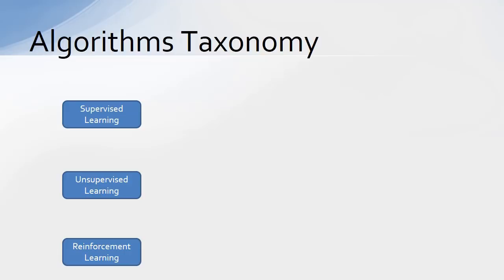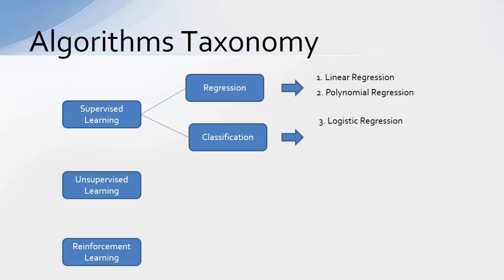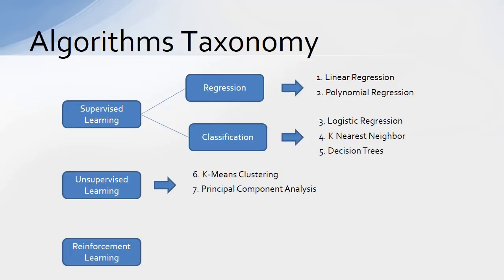Supervised learning can be further subdivided into regression and classification. The top regression algorithms are linear regression and polynomial regression. The top classification algorithms are logistic regression, K nearest neighbor, and decision trees. The popular unsupervised learning algorithms are K-means clustering and principal component analysis.